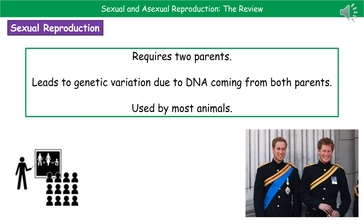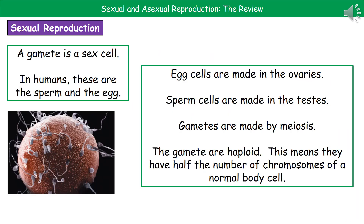The second type of reproduction is sexual reproduction. The key features are that we need two parents, unlike asexual reproduction which only needs one, and the key advantage is that we get genetic variation because we're getting DNA from both parents. This tends to be the type of reproduction used by most animals. Our sex cells — the sperm and the egg — have a more scientific name: gametes.